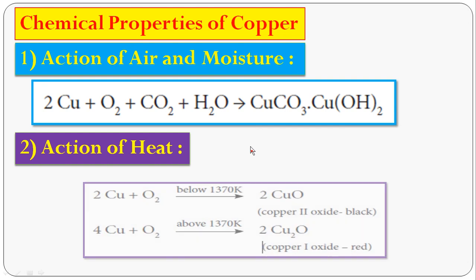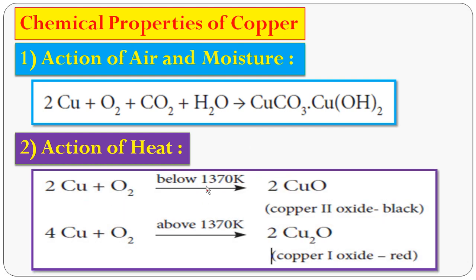The second chemical property is the action of heat. On heating copper at different temperatures, it forms two types of oxide. Below 1370 K, copper reacts with oxygen to form copper(II) oxide (CuO), which is black in colour. Above 1370 K, copper reacts with oxygen to form copper(I) oxide (Cu₂O), which is red in colour. Copper has two valencies, 1 and 2, corresponding to these two oxides.